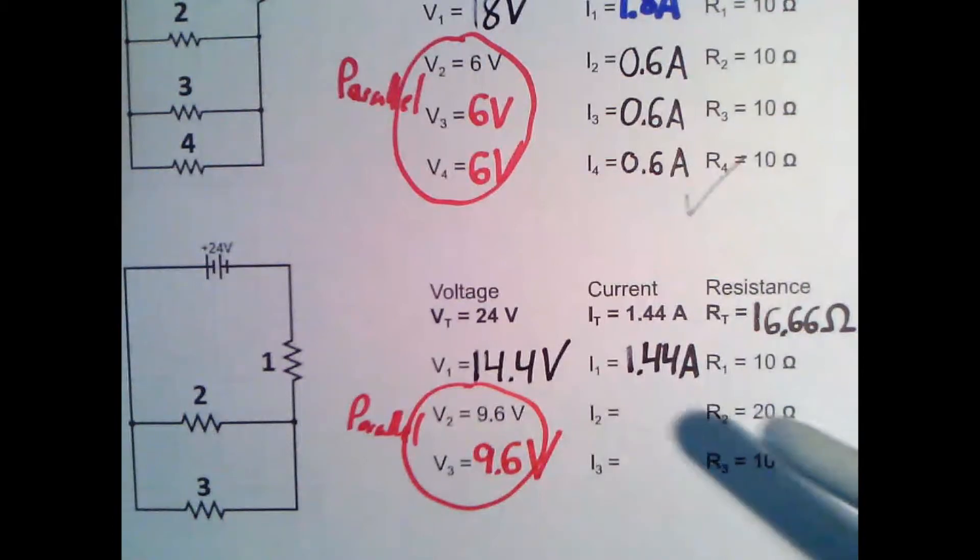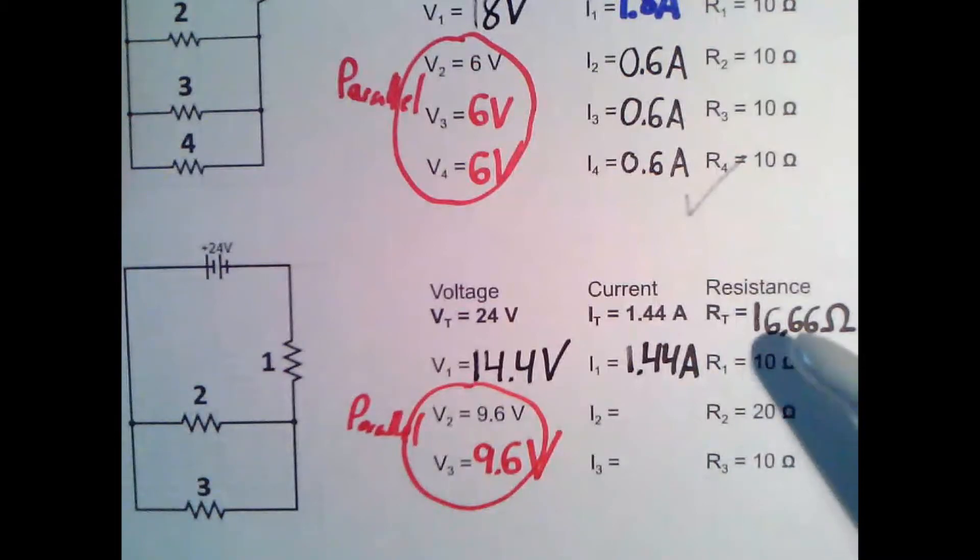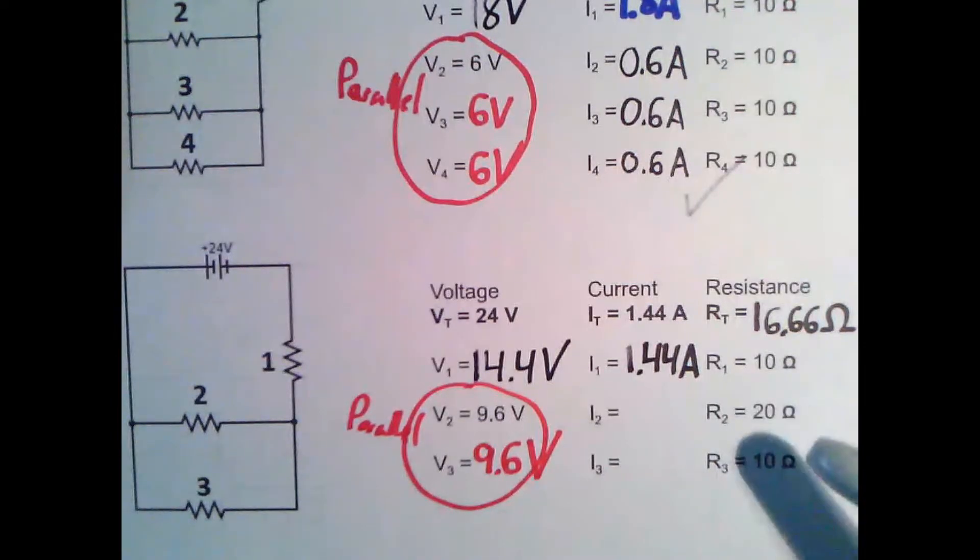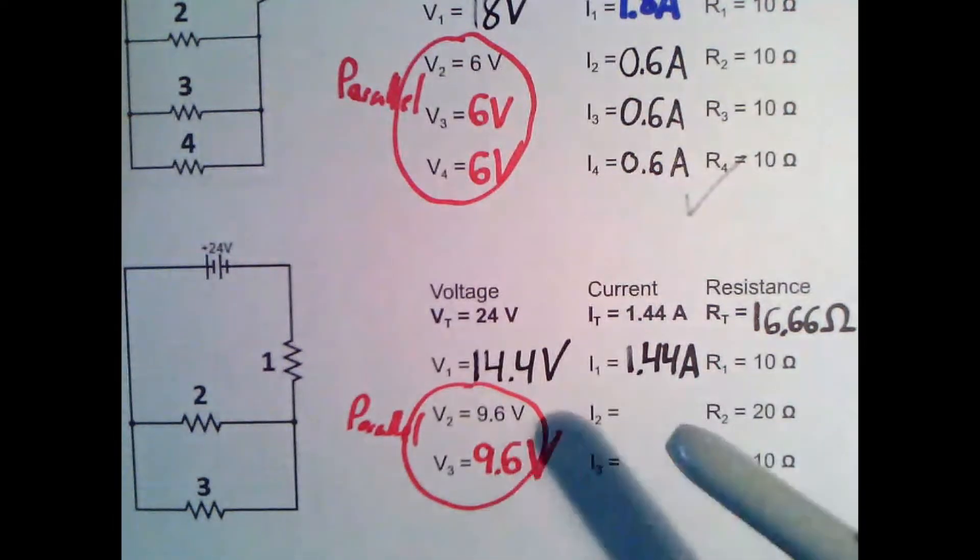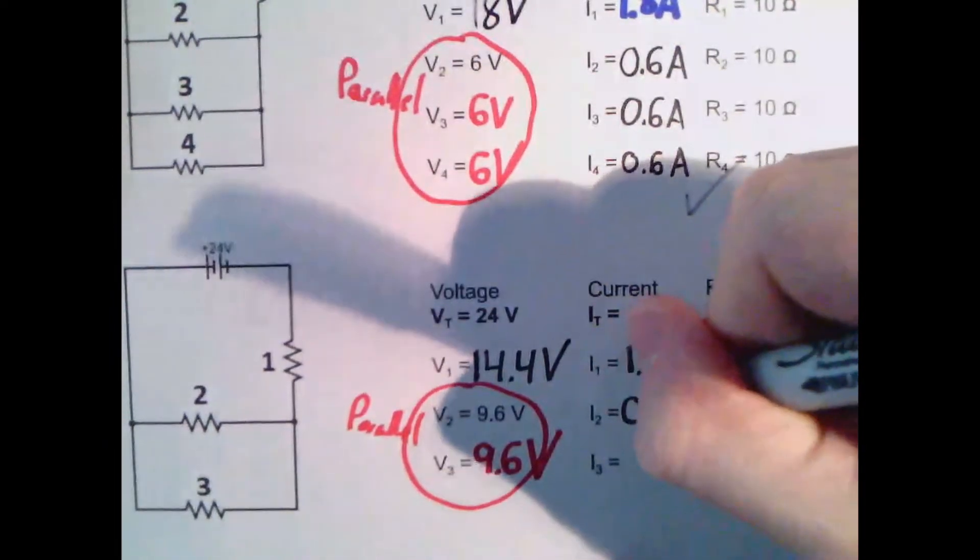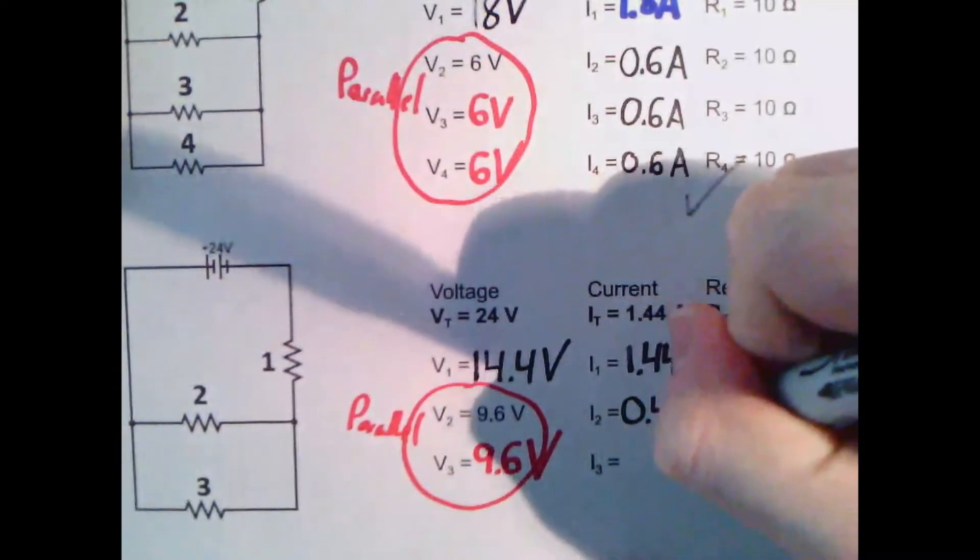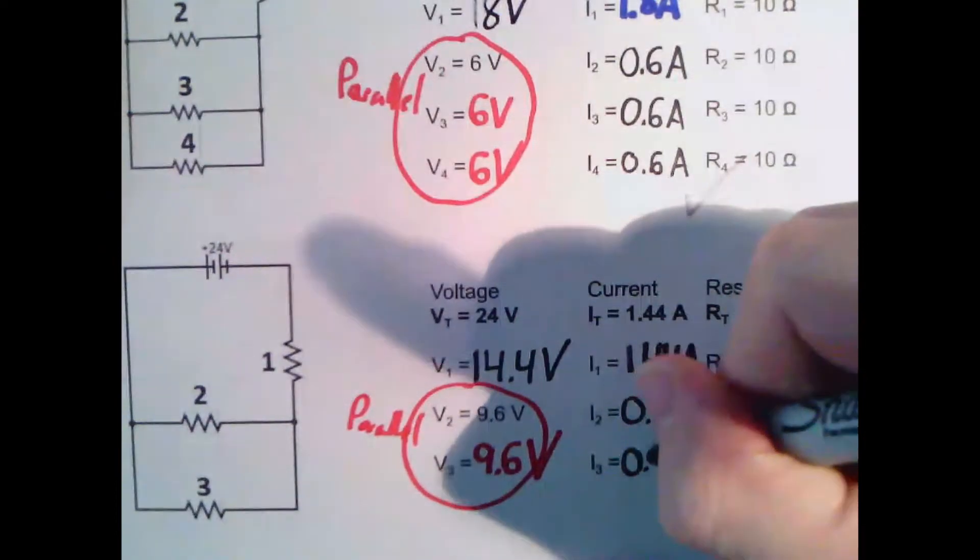If we're thinking about the current, how does the current get split up between these paths? Well, you notice probably the reason we have weird numbers of decimals is that this resistance and this resistance are different. So this one has a resistance of 20, this one has a resistance of 10. So let's calculate the current for each. So current we know is this number divided by this number. So we're going to do 9.6 divided by 20. So this is 0.48. And then we do 9.6 divided by 10. So this is 0.96.